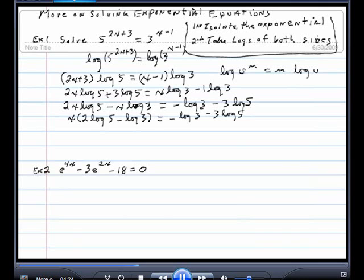And then finally I'll divide out the bracket. On the left divide by the bracket and the brackets will cancel. On the right divide by the bracket and I have 2 log 5 minus log 3. And that is my solution.